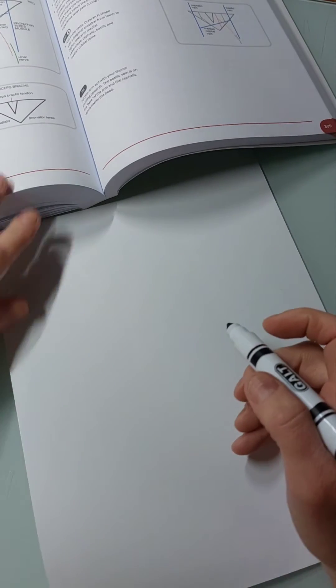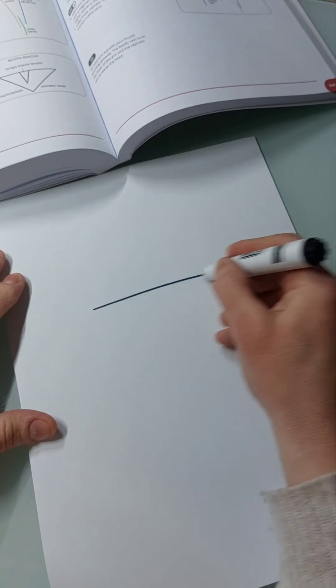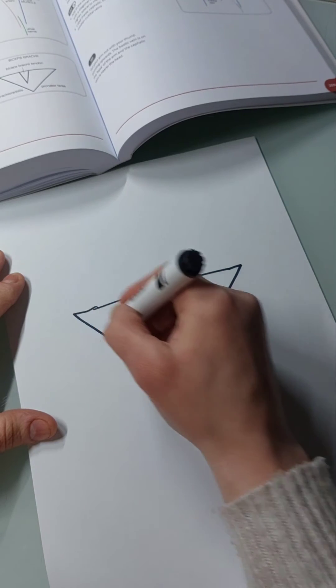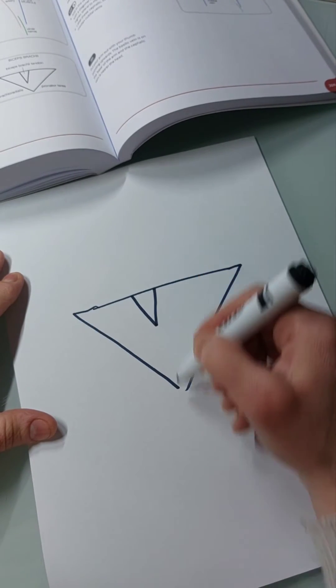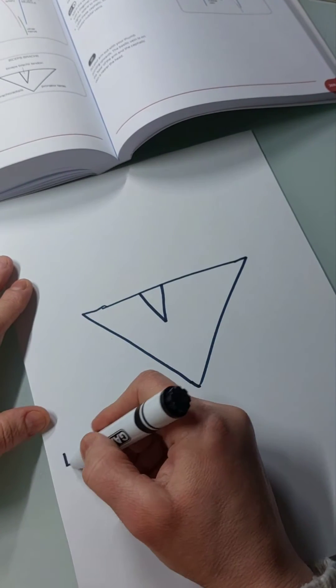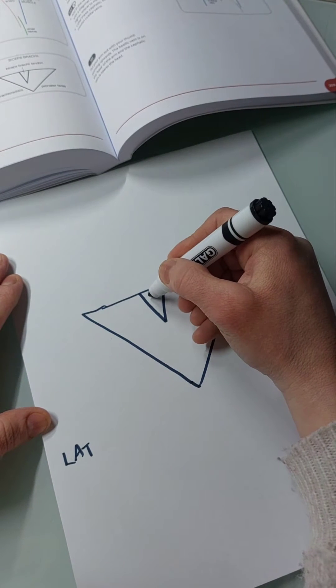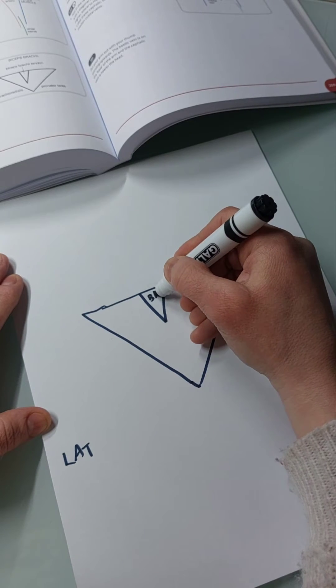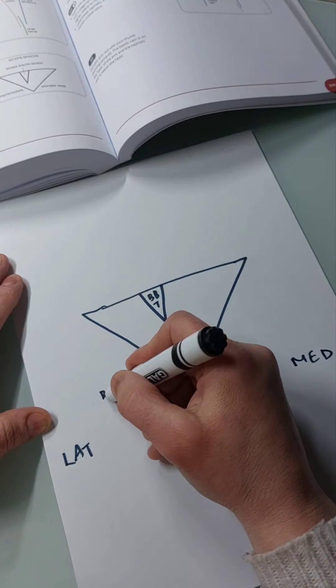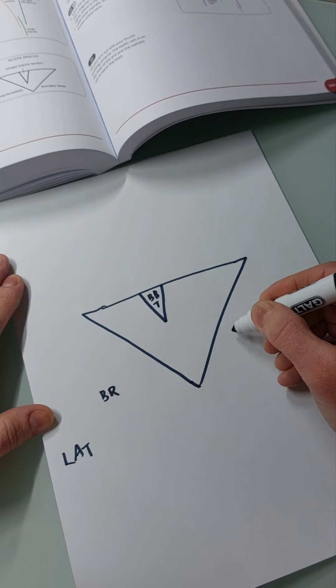To start with, I draw a triangle and a second triangle. This is going to be lateral and this is medial. The small triangle represents the biceps brachii tendon. Here is the brachioradialis muscle, here's the pronator teres muscle, and here's the biceps brachii muscle. The first step after that, step two, is to add in the arteries.